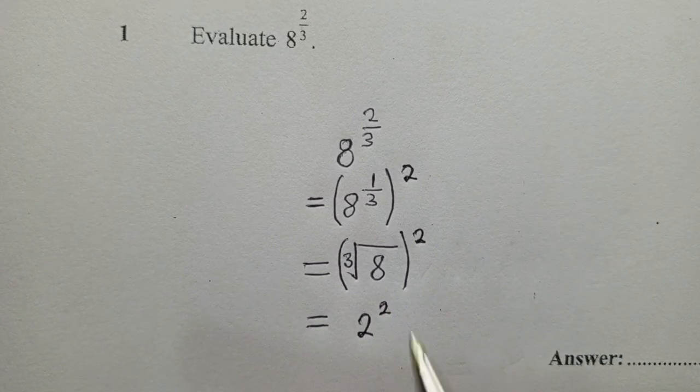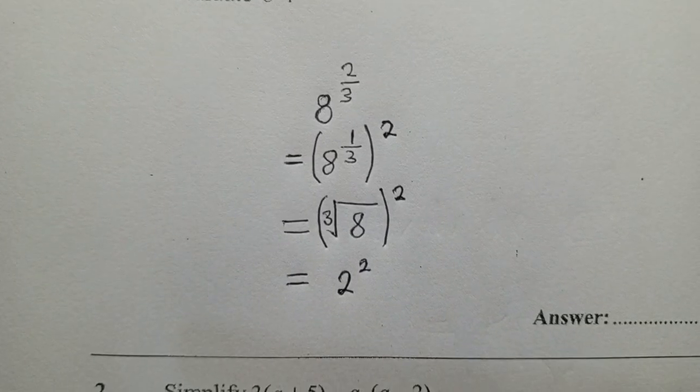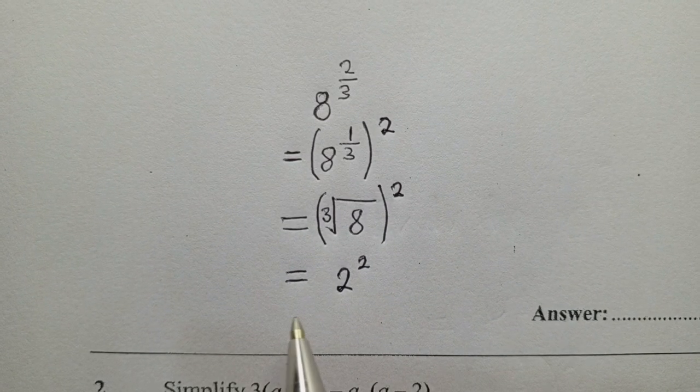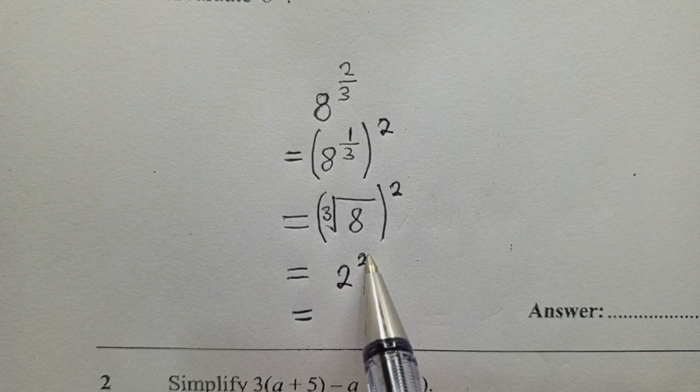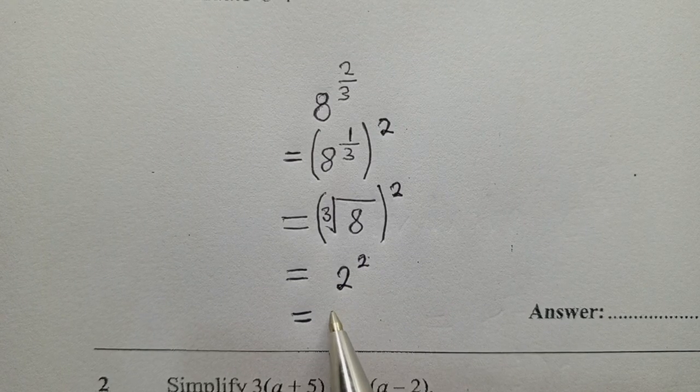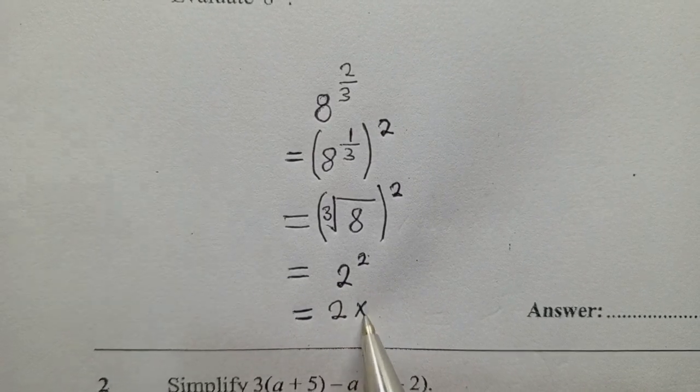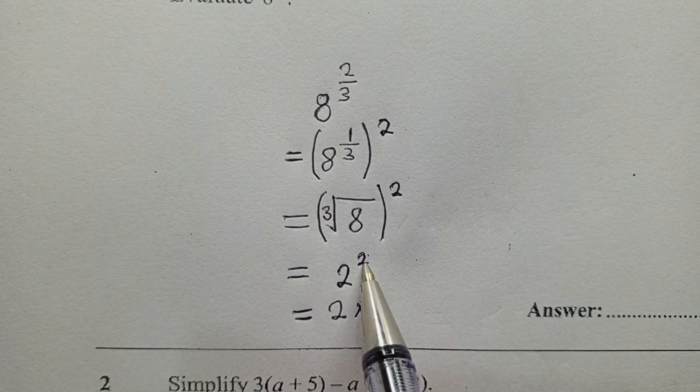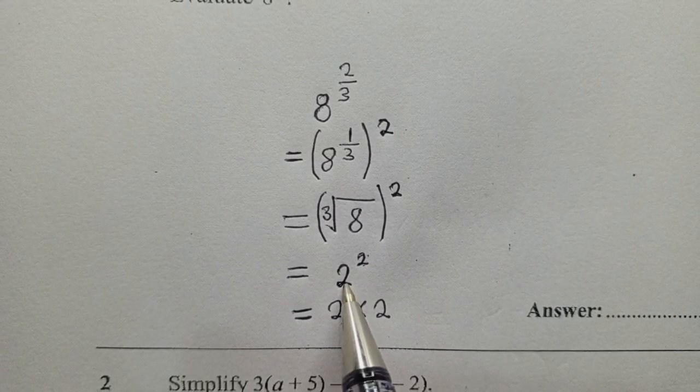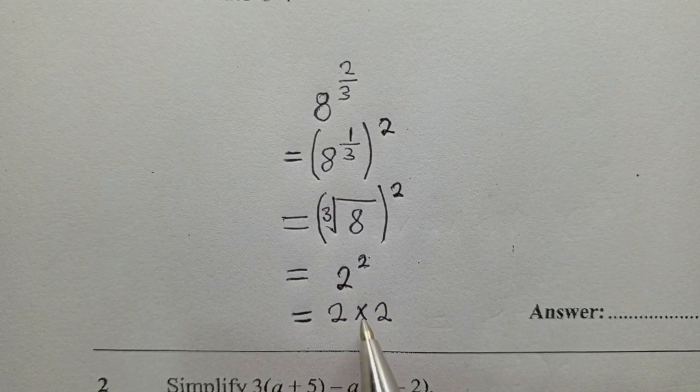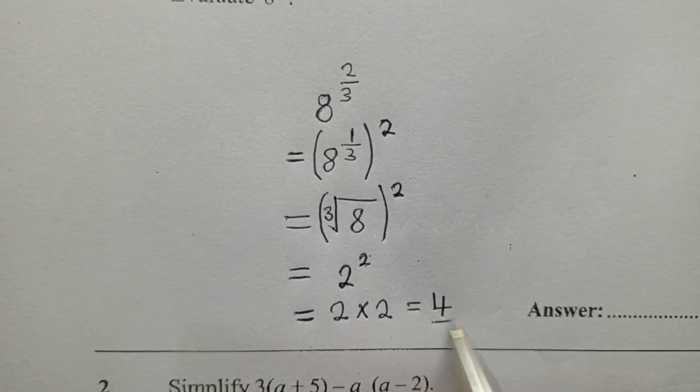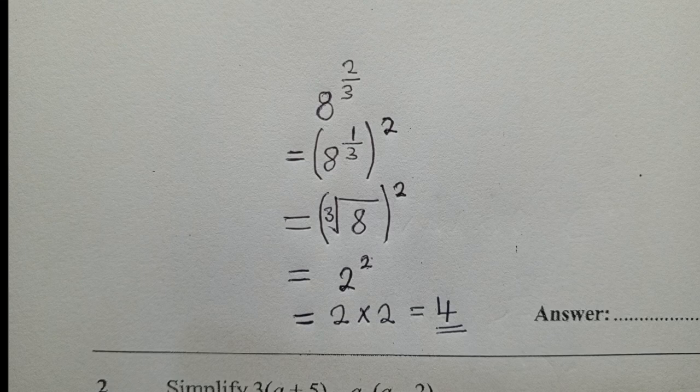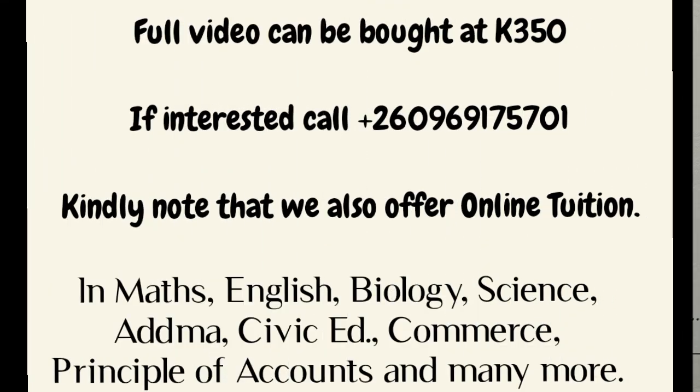So you put a power 2 like this. So from this stage, we can say what is 2 to the power 2, which simply means 2 times 2. This power is telling us that we must multiply this base by itself two times, which is giving us 4. So this is how we get to find the solution for the first question.